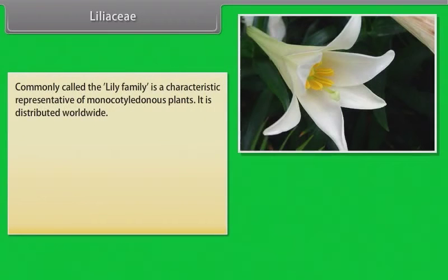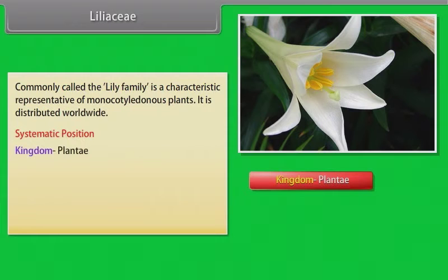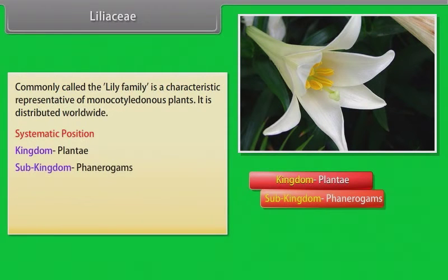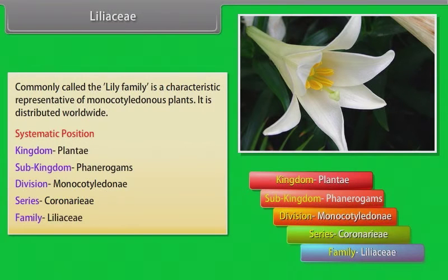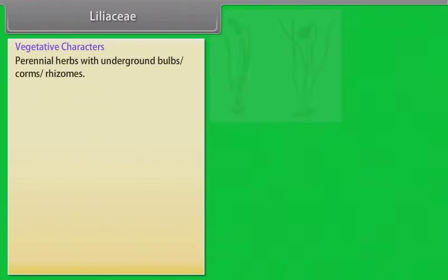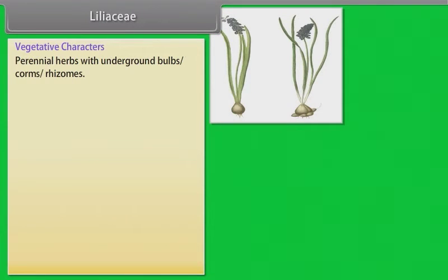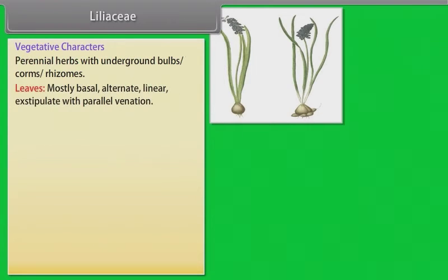Liliaceae, commonly called the lily family, is a characteristic representative of monocotyledonous plants. It is distributed worldwide. Systematic position: Kingdom Plantae, Sub-kingdom Phanerogams, Division Monocotyledoni, Series Coronariae, Family Liliaceae. Vegetative characters: perennial herbs with underground bulbs, corms, or rhizomes; leaves mostly basal, alternate, linear, exstipulate, with parallel venation.